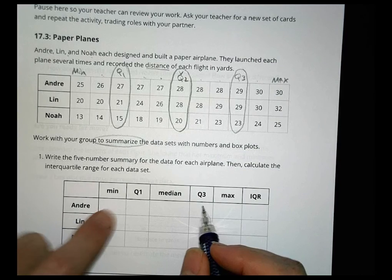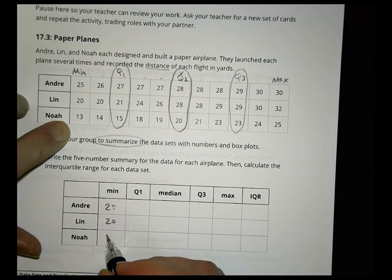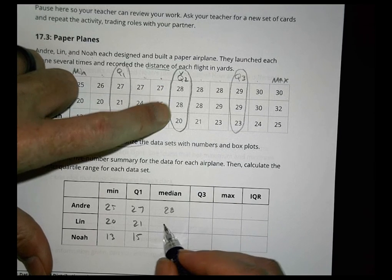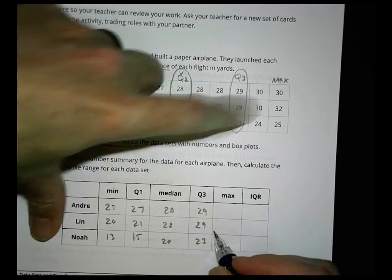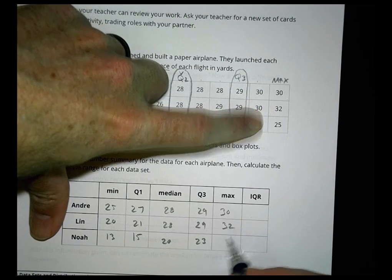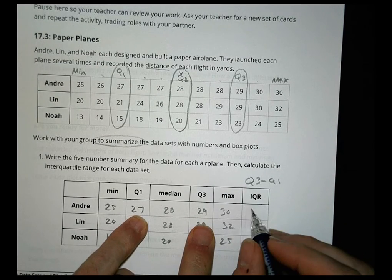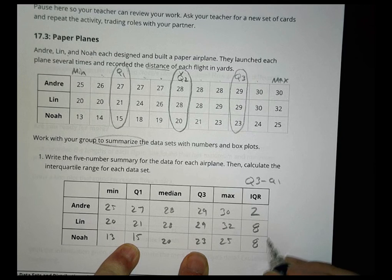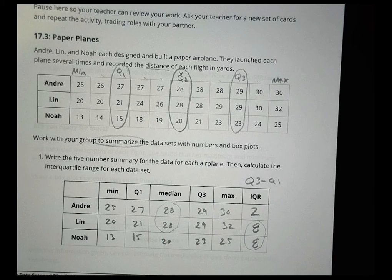Because the first thing I want us to do is to make these, put all these points in this little box right here. So Andre was up here at 25, and we could just go down. Lynn is at 20, Noah is at 13. Quartile 1, 27, 21, 15. Median 28, also 28, and 20. Quartile 3, 29, 29, and 23. Then maximum 30, 32, and 25. IQR members, Q3 minus Q1. So 29 minus 27 is 2. 29 minus 21 is 8. And 23 minus 15 is also 8. So I have similar IQRs here. I have the same mediums there. Those are the only other things that match up.